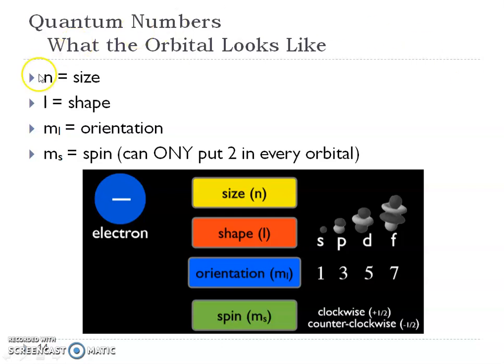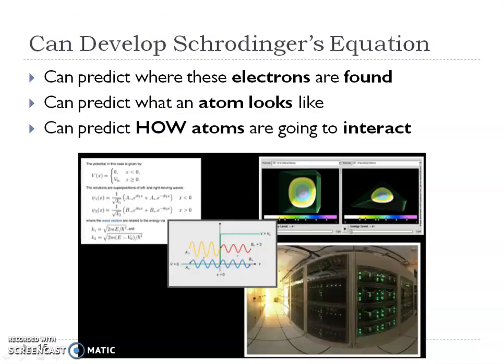He worked through these by symbols. Back in the day these symbols and number labels were really important, but we're not going to worry about that too much. He also talked about the Schrödinger equation and how it can help us predict where those electrons are found, what that atom looks like, and really importantly, how those atoms are going to interact with each other.